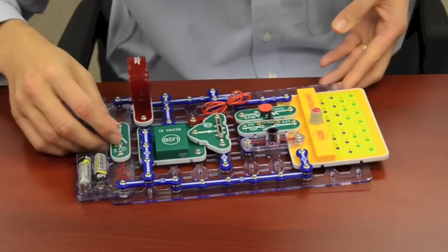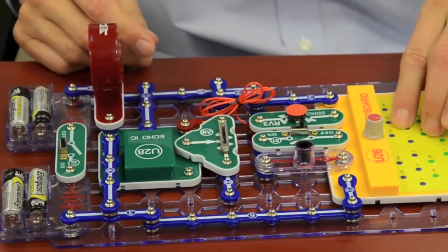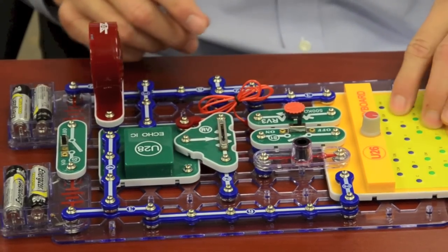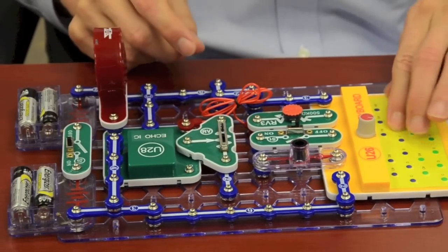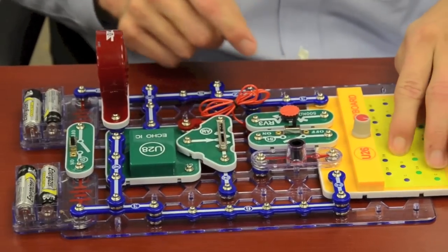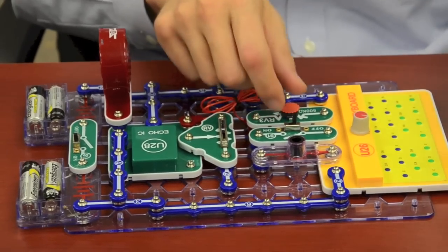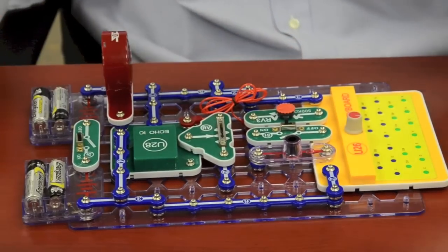Now I'm going to connect the echo module up to the keyboard. That's with high echo, here's with low echo. Now I'm going to add the optical theremin. More echo.